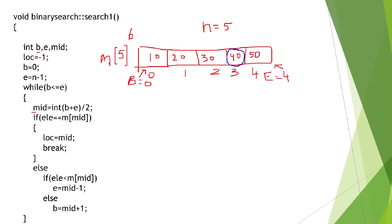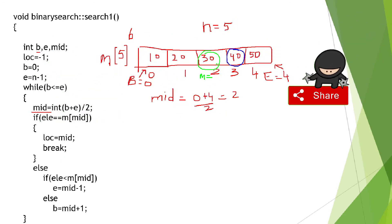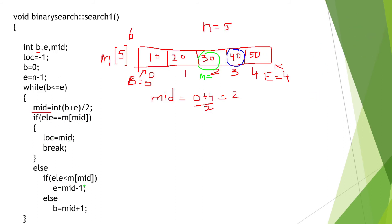To find the middle element, I compute mid equals b plus e divided by two. With b equals 0 and e equals 4, mid equals 0 plus 4 divided by 2 equals 2, so the middle element is m[2] which is 30. Now I check: is 40 equal to 30? No. Is 40 less than 30? No. So it must be greater, and therefore b becomes mid plus one — b is no longer 0, it moves to index 2. The first iteration of the while loop is complete.